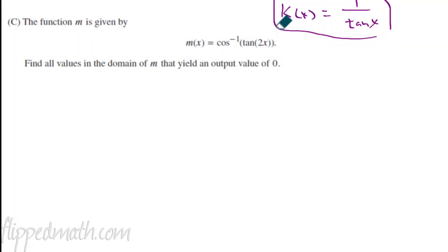Last one, part c. Part c says we have a function here. And man, this is ugly. But we want to find all the values of the domain that yield an output of zero. So when we plug a zero here for the output, that will equal the inverse cosine of the tangent of 2x. So this can get a little confusing because we have an inverse cosine of a tangent of an angle, all equals zero. So what can we do here? Well, I don't like that inverse cosine. So how do you get rid of it?